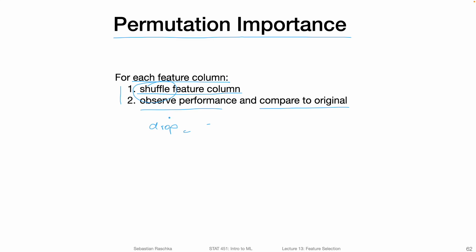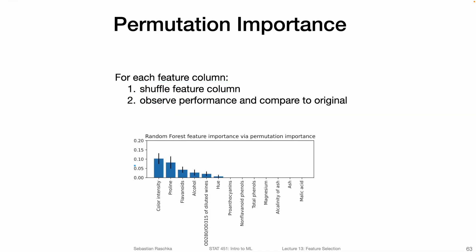Don't worry if it sounds a little complicated — I will walk through this more slowly in the upcoming slides. Really, the nutshell explanation is that we shuffle one feature at a time and look at the performance of a model before and after shuffling to assess how important that feature is. When we apply this method to each column in the dataset, we can make a nice bar plot showing the importance of each feature, optionally with a standard deviation.